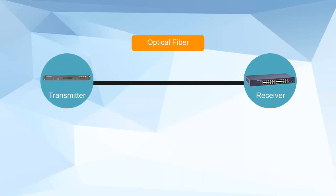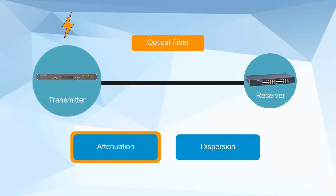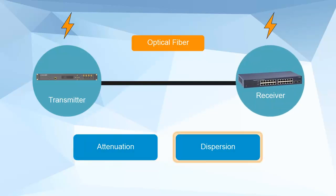The use of optical fiber introduces attenuation and dispersion into the system. Attenuation tends to increase the power requirements of the transmitter in order to meet the power requirements of the receiver. Dispersion, on the other hand, limits the bandwidth of the data that can be transmitted over the fiber.